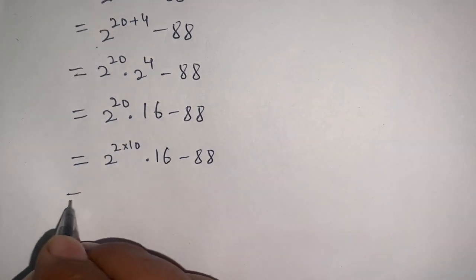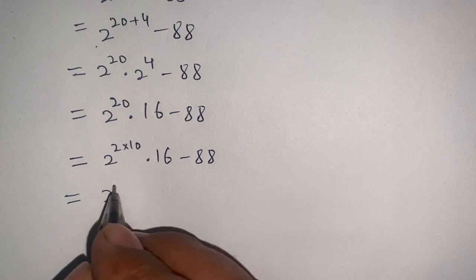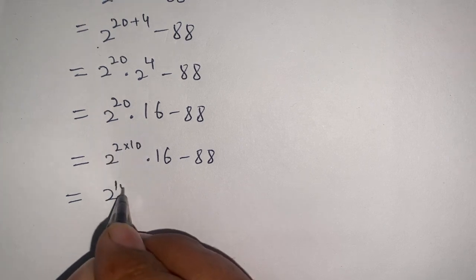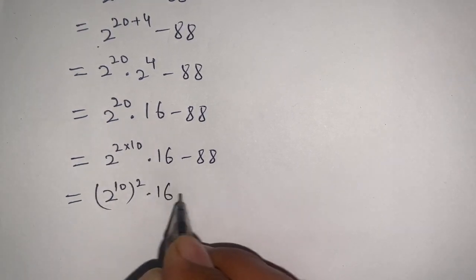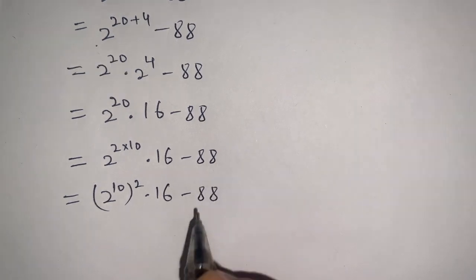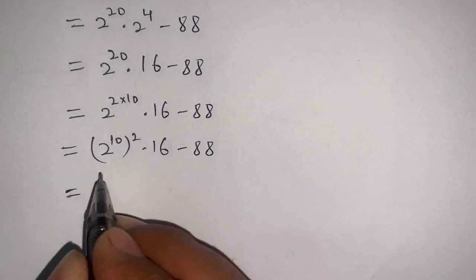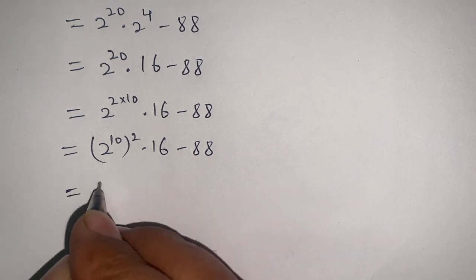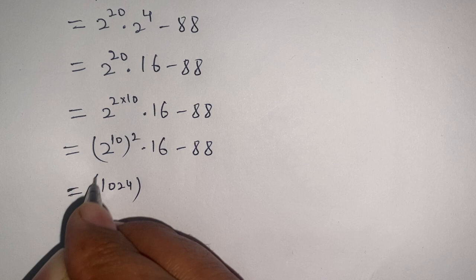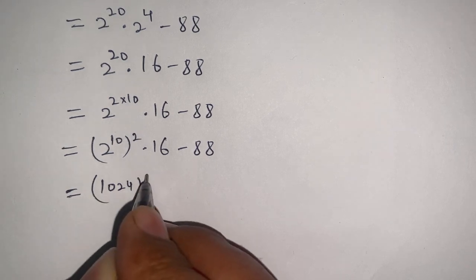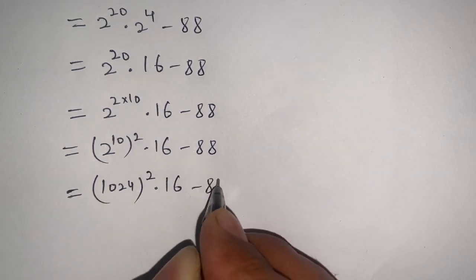We can write 2 power (2 times 10) as (2^10) whole power 2 times 16 minus 88. Now, 2 power 10 gives out 1024, so it becomes (1024)^2 times 16 minus 88.